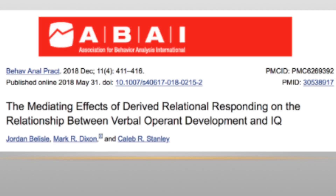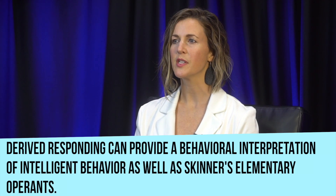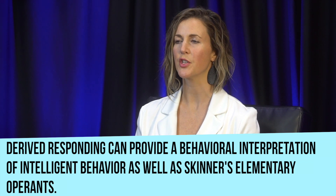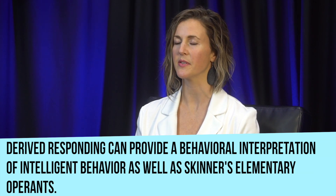Dixon and colleagues have been doing a lot of recent work on stimulus equivalence and its application via PEAK — stay tuned for more content on that. Dixon, Belisle, and Stanley in 2018 demonstrated a strong, significant relationship between derived relational responding and intelligence in individuals with autism, by evaluating the degree to which participant results on the PEAK equivalence pre-assessment mediated the relationship between the PEAK direct training assessment and intelligence. Results support strong positive correlations between both assessments and IQ. The authors conclude that the findings correspond with relational frame theory, suggesting that derived responding can provide a behavioral interpretation of intelligent behavior as well as Skinner's elementary operants.